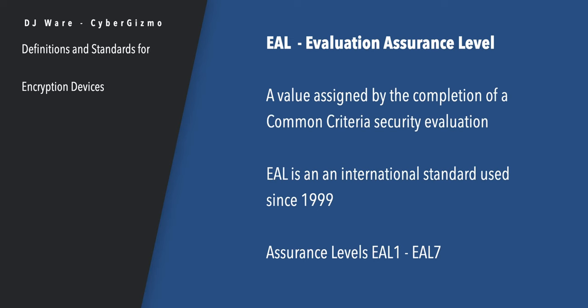Before we jump off into all this, there is a lot of terminology, standards, and certifications you need to understand. The first one you're going to run into is something called EAL — usually with a number after it — and that is the Evaluation Assurance Level. The value assigned to it is based on the completion of a specific set of tests, compiled as part of the Common Criteria security evaluation, first implemented in 1999. There are assurance levels from EAL 1 all the way up to EAL 7.